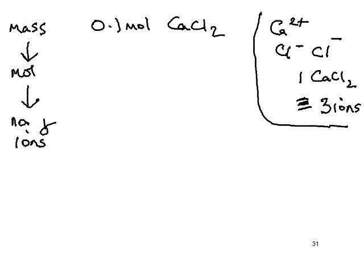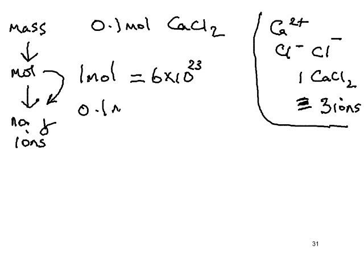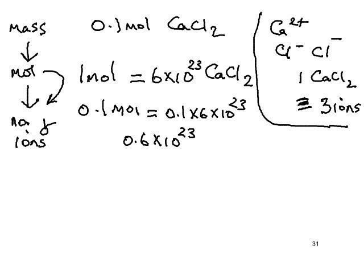The statement that links moles to numbers of particles is: one mole equals 6 × 10²³. Just like one dozen is a descriptor meaning twelve, one mole is a descriptor meaning this huge number. So one mole equals 6 × 10²³ of the formula units. Now, 0.1 mole is going to be 0.1 times that, which is 0.6 × 10²³.